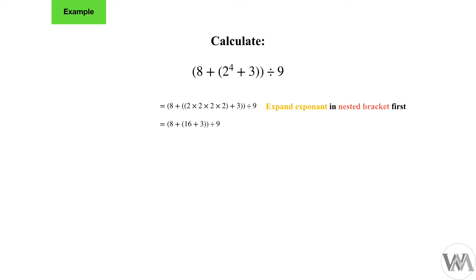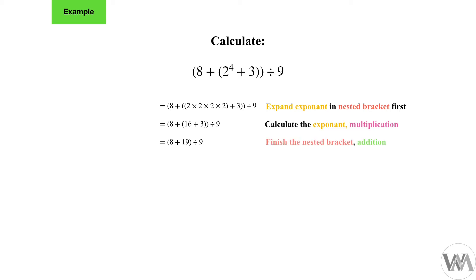We calculate the exponent: 2 times 2 times 2 times 2 equals 16. So we have calculated the exponent using multiplication. Our next step to complete the nested bracket is addition — we also have plus 3 — and 16 plus 3 equals 19. There we have finished our nested bracket by doing the addition.